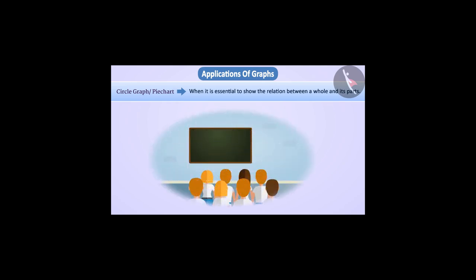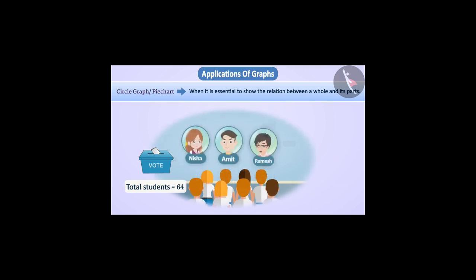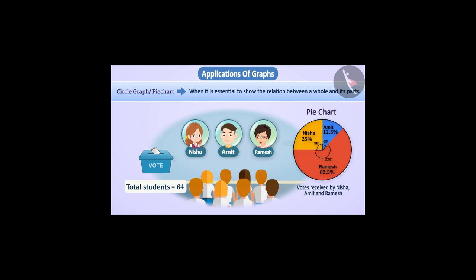Sometimes we need to know the relation between a whole and its parts. In this situation, we use a circle graph, means pie chart. For example, in the election of class monitor, a total of 64 students gave their votes. Out of this, the details of votes received by Nisha, Amit and Ramesh are given in the pie chart shown.